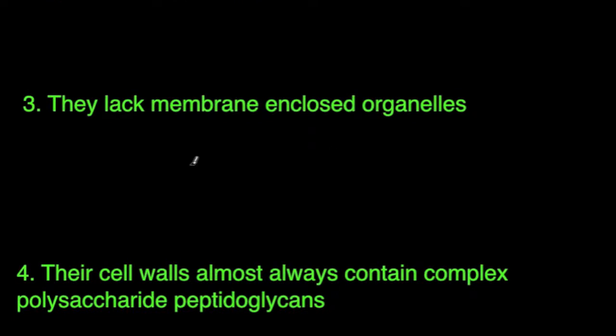The third one is they lack membrane-enclosed organelles. So here we're going to draw your prokaryote again, and you're going to see the free-floating DNA. You're going to have probably a plasmid in here, plasmid one or two, could be more.